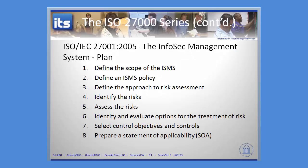We'll start off with the plan phase. During the plan phase, you're going to define the scope of the InfoSec management system, define your policy that governs that InfoSec management system, and define approaches to risk assessment — are you going to do a business impact analysis, a SWOT analysis? You then identify those risks, assess them, and evaluate options for the treatment of risk. Once you identify and evaluate those options, you put in some control objectives and controls and then prepare a statement of applicability — who does this actually apply to?